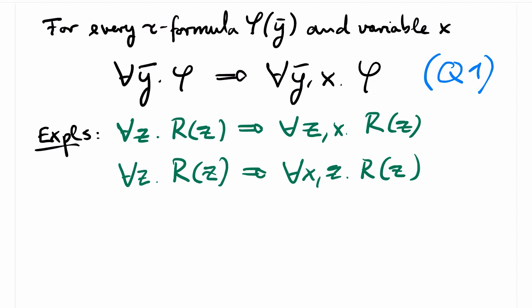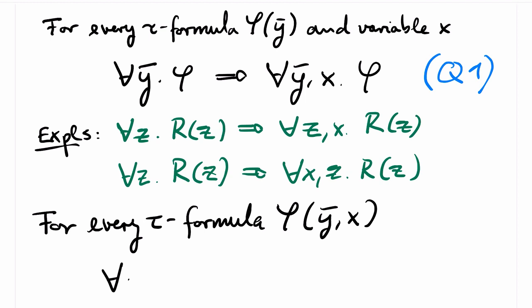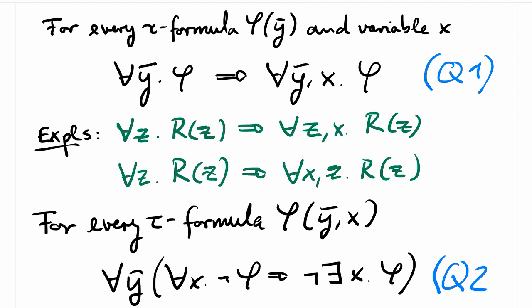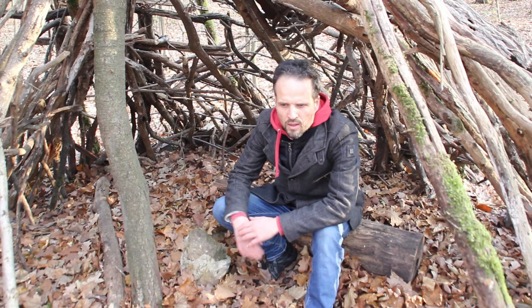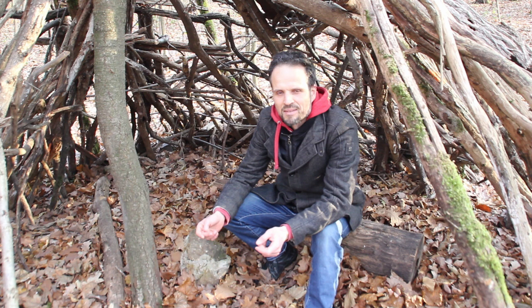Q2 also consists of infinitely many axioms. We have, for every τ-formula φ with free variables y and free variable x, the axiom: ∀y (∀x ¬φ → ¬∃x φ). It is clear that Q2 holds in all τ-structures.